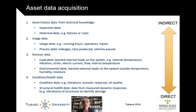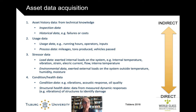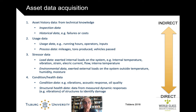Even more specific is not looking at the load on the system but at the actual condition of the asset. There you can look at vibration, acoustic response, and oil quality. Structural health data is collected specifically to see if there are damages — for instance, a composite part of an aircraft can be hit by something and show no external deformation, but inside there may be delamination. You can detect this by tapping with a small hammer to hear if the sound differs from a healthy part of the composite material.